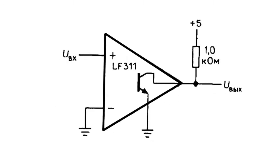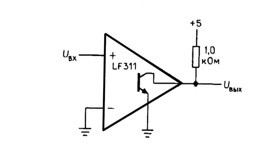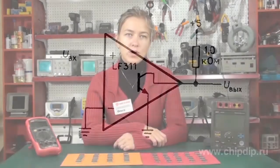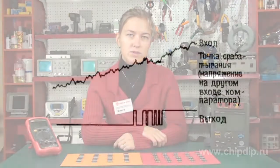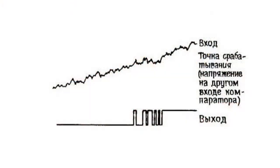In case the input signal is slow and alternating, output voltage can also change quite slowly. Moreover, if there is noise present in the input signal, output chatter can occur when input voltage passes through the switch point.